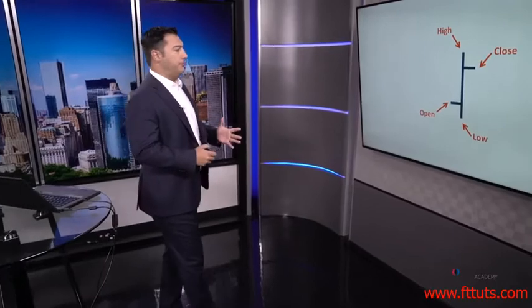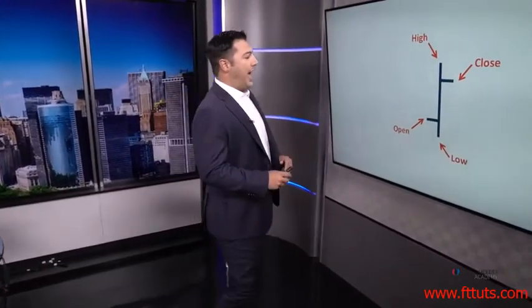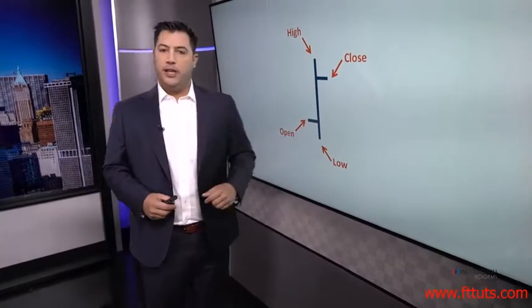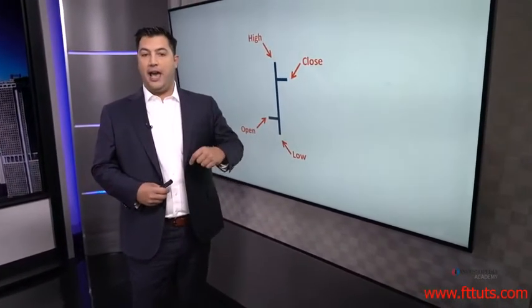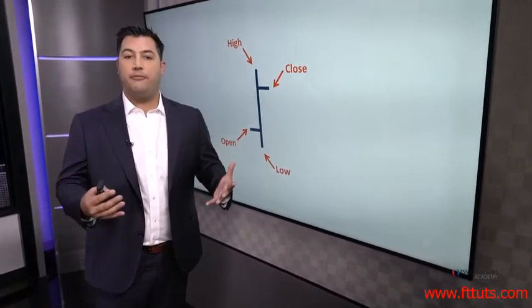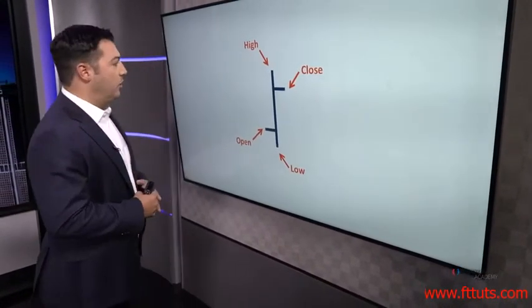The first type that we're going to talk about is the bar chart. It's very simple, and each period, when I say period, if we're looking at a daily chart we're looking at a daily bar, if we're looking at a weekly chart we are looking at a weekly bar. So period just is the time frame that we are describing.